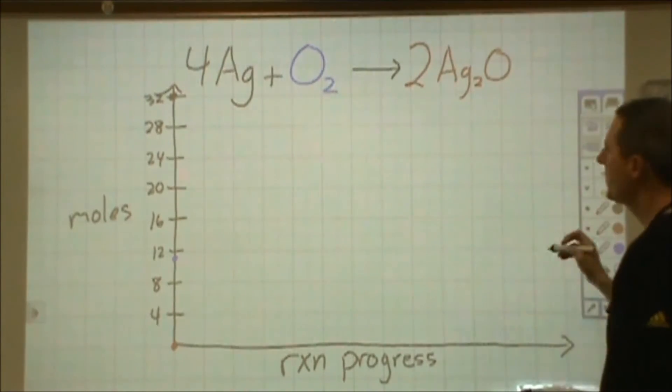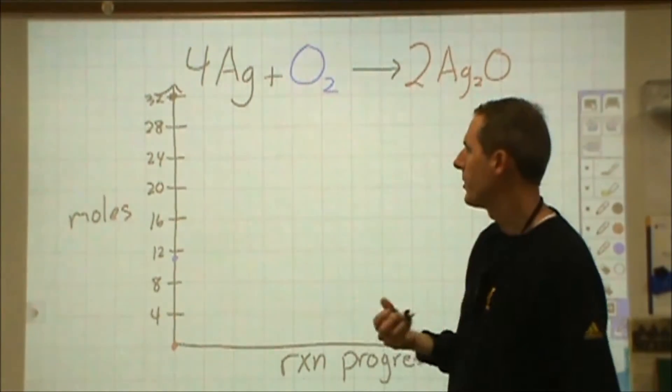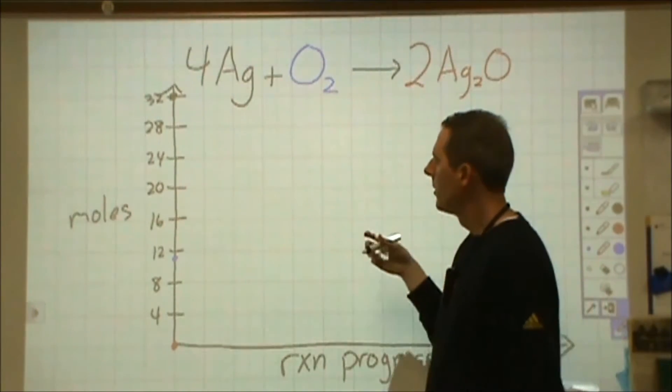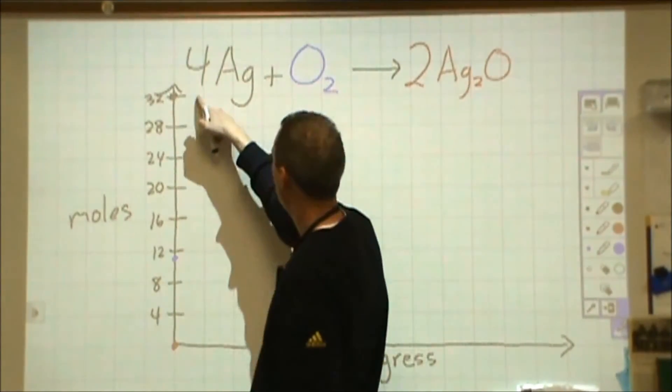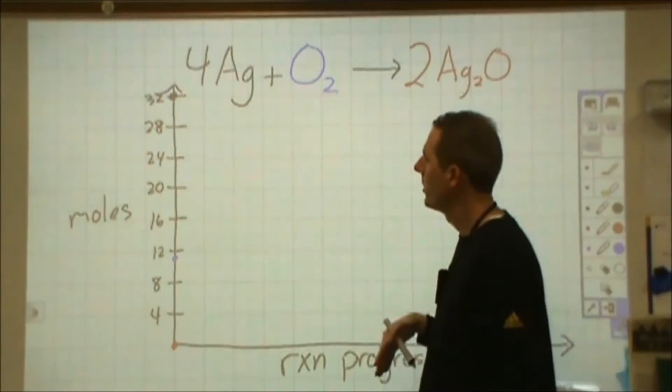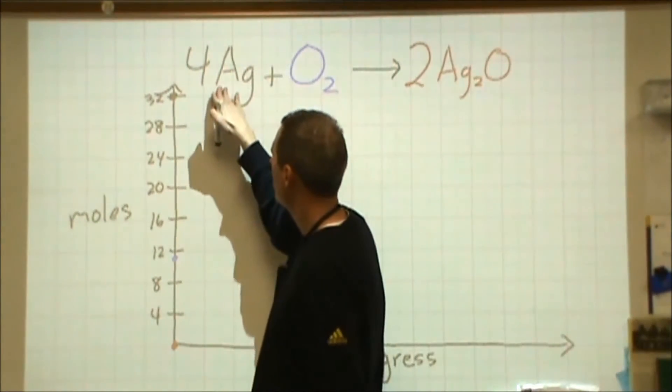So what we're going to do is every time I move over a space, I'm going to use up a certain amount of chemical. So every time I move over one in my reaction progress axis, I'm going to use up four moles of silver.